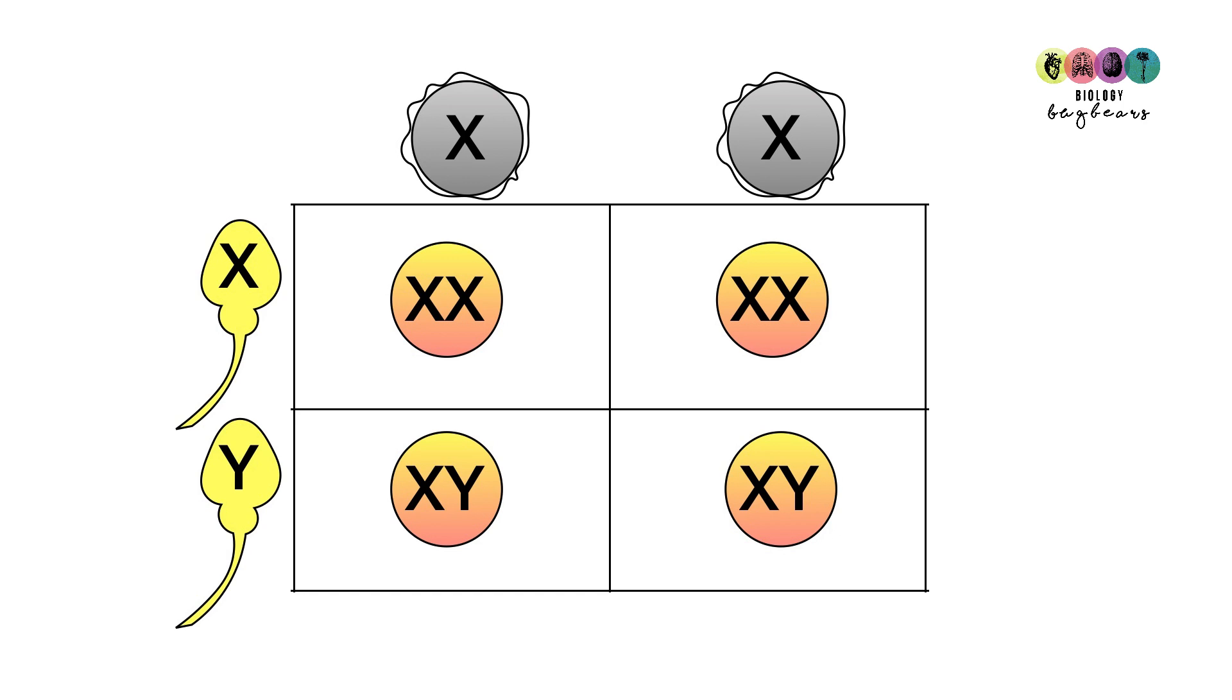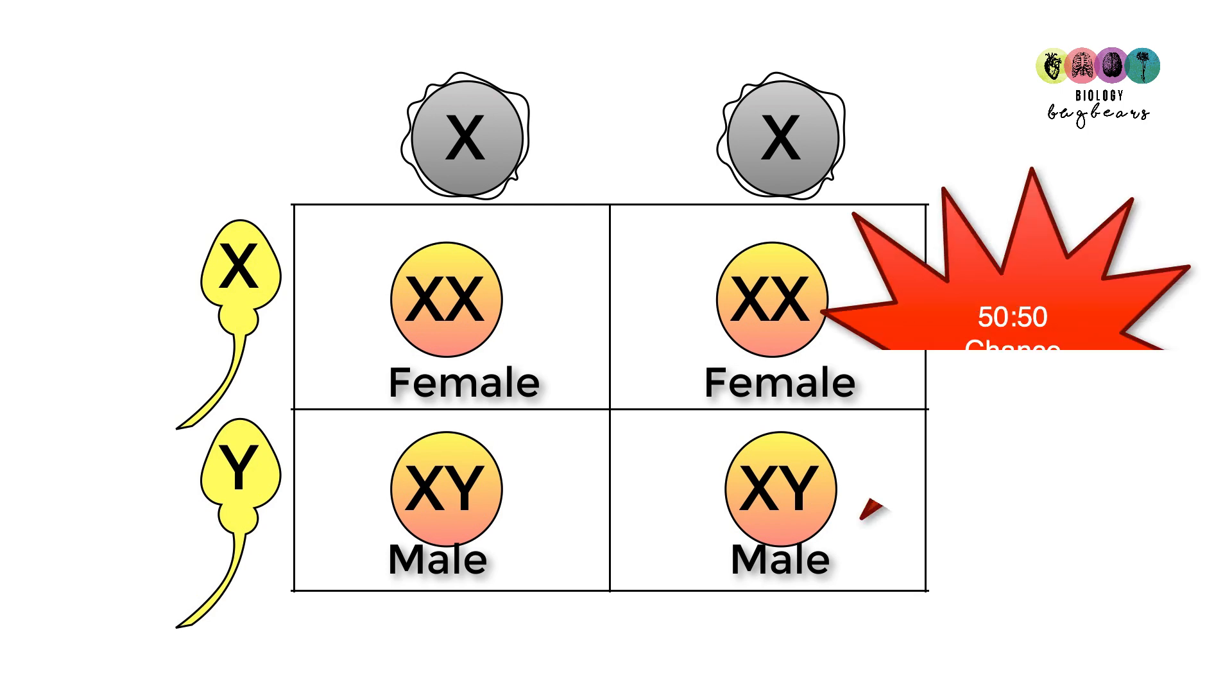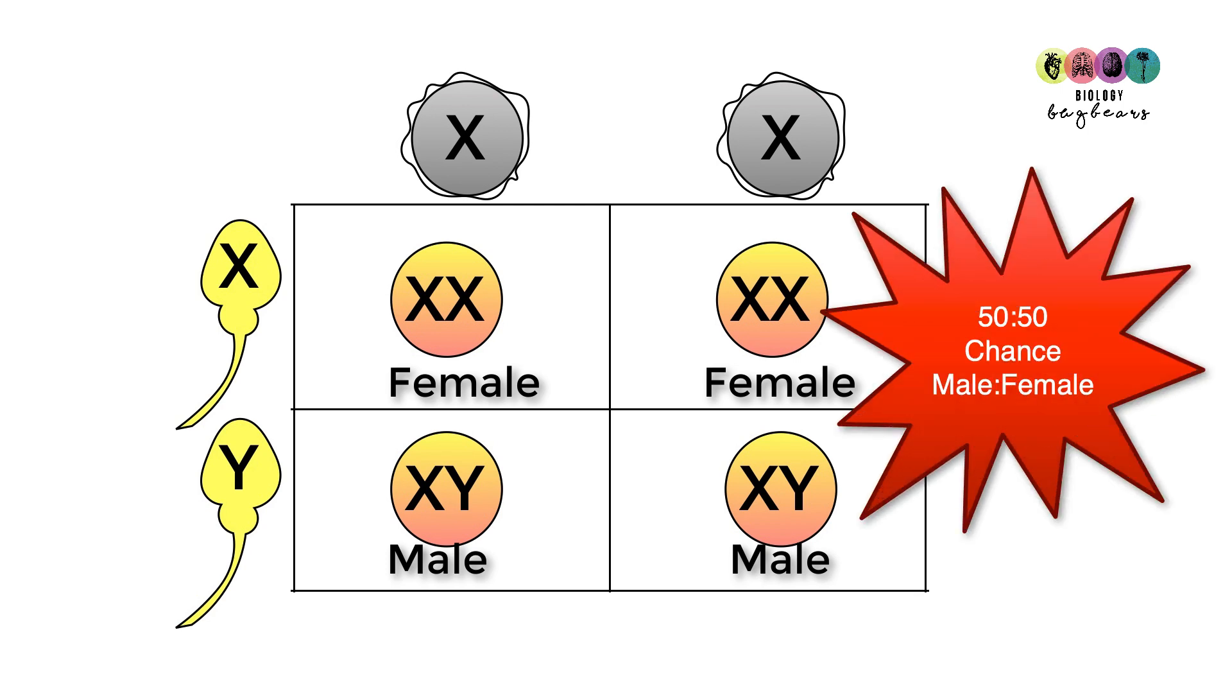So the first offspring or the first child is going to be XX, so that's going to be female. The next one is going to be XX, so that's another female. Then you're going to have the X and the Y, that's a male. And then you have another X and a Y, that's another male. So you can see from this Punnett square that there is a 50-50 chance of having a male or a female offspring.